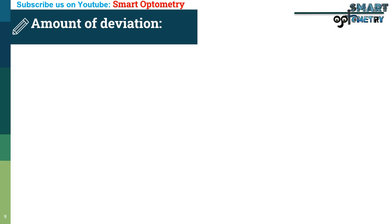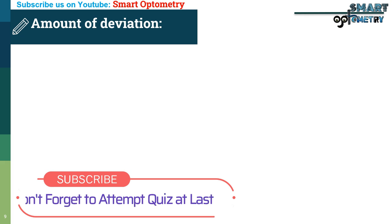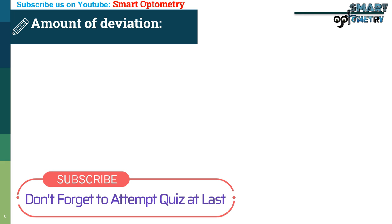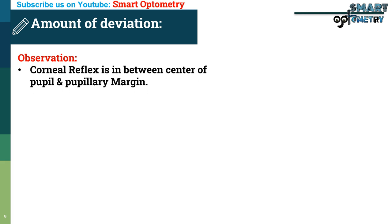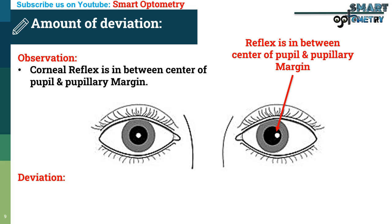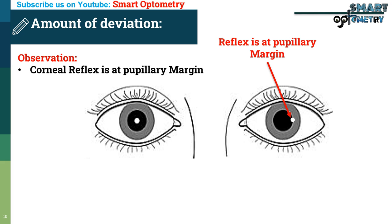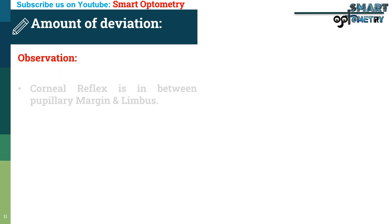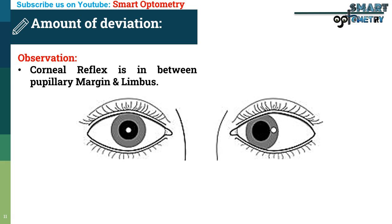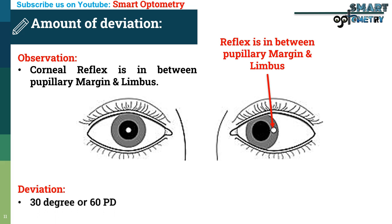Estimation of deviation by Hirschberg corneal reflex test: Accuracy is less because this is an objective test and we are not using any prism to measure the deviation, but it is quite good for rough estimation. If the reflex is between the center of the pupil and the pupillary margin, rough estimation is 7 degrees or 15 prism diopters. If the reflex is at the pupillary margin, rough estimation is 15 degrees or 30 prism diopters. If the reflex is between the pupillary margin and the limbus, rough estimation is 30 degrees or 60 prism diopters.